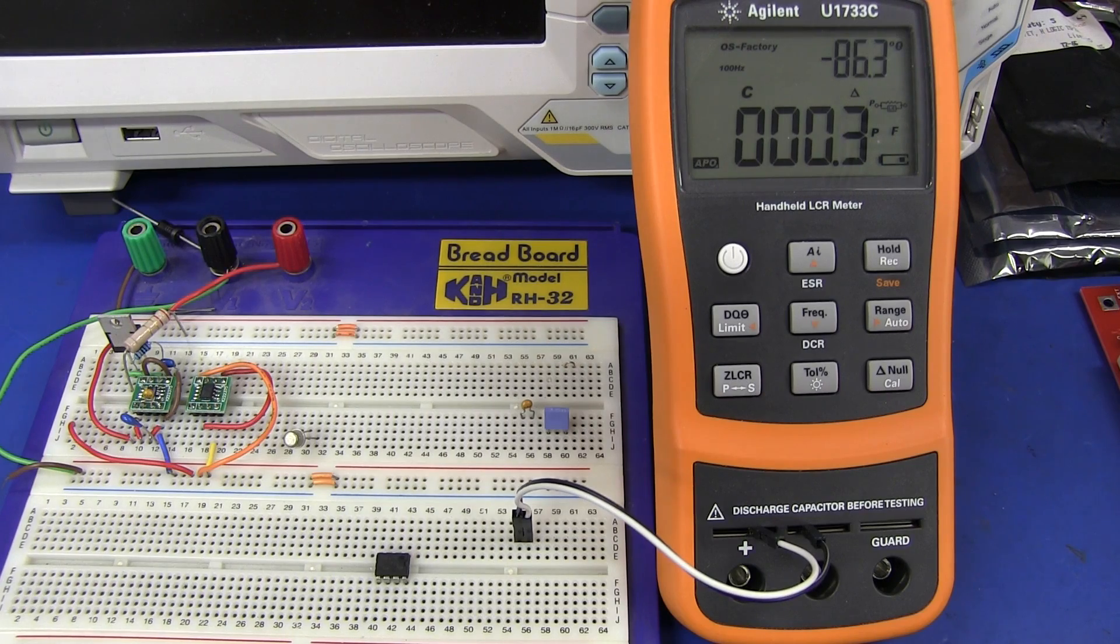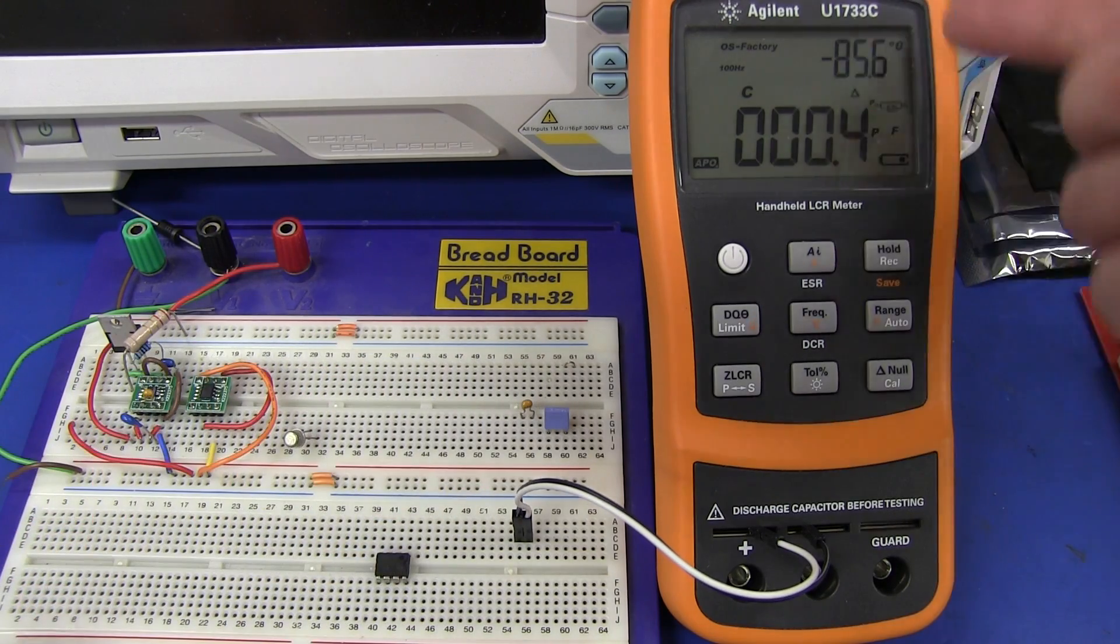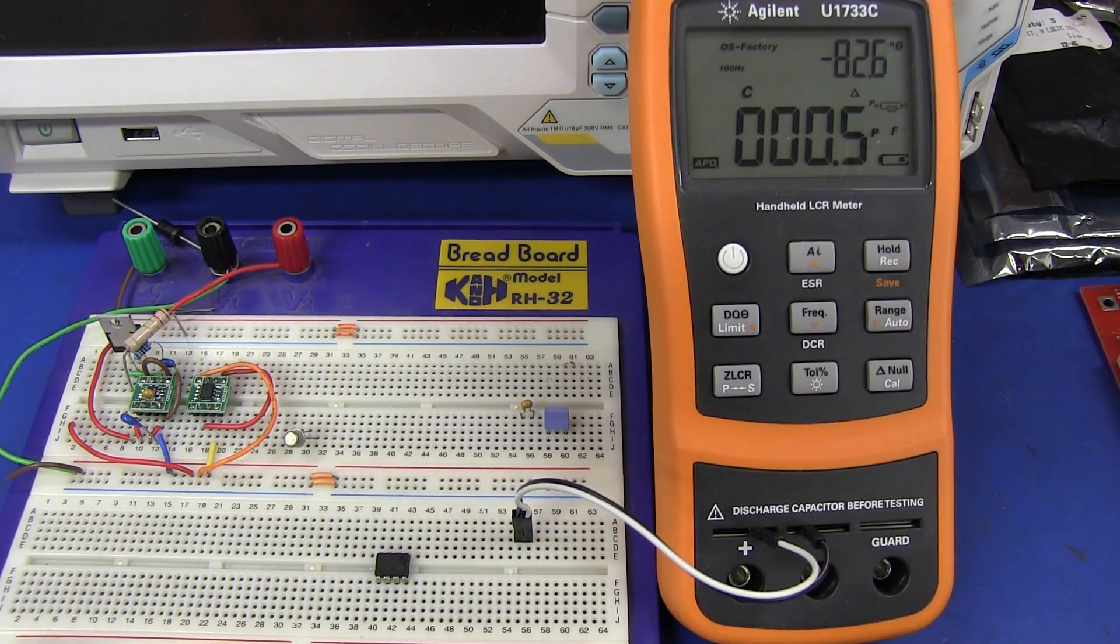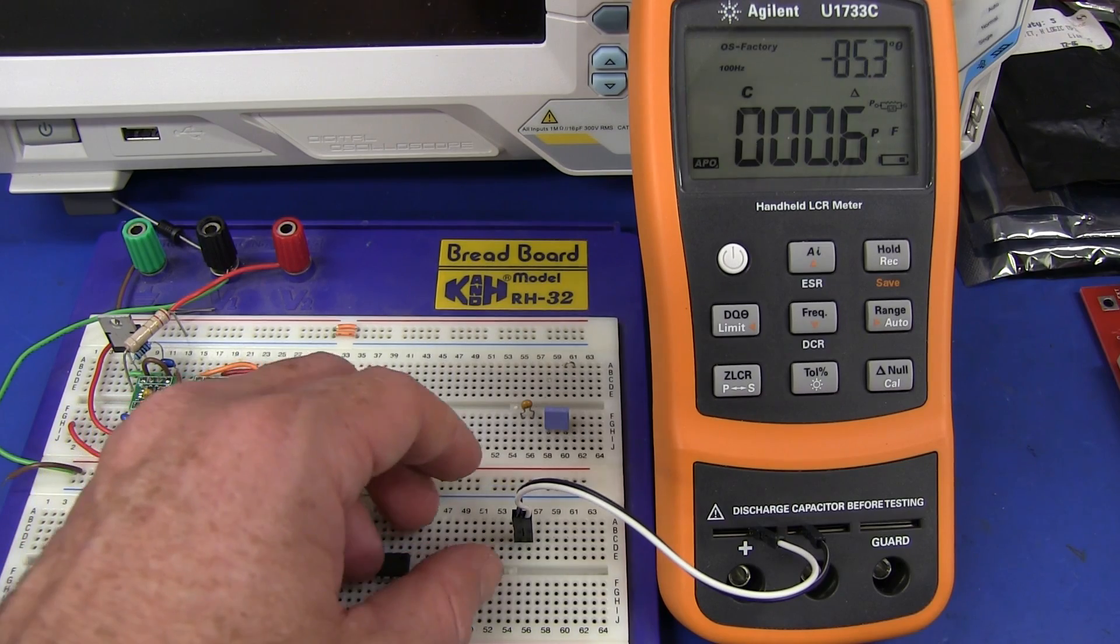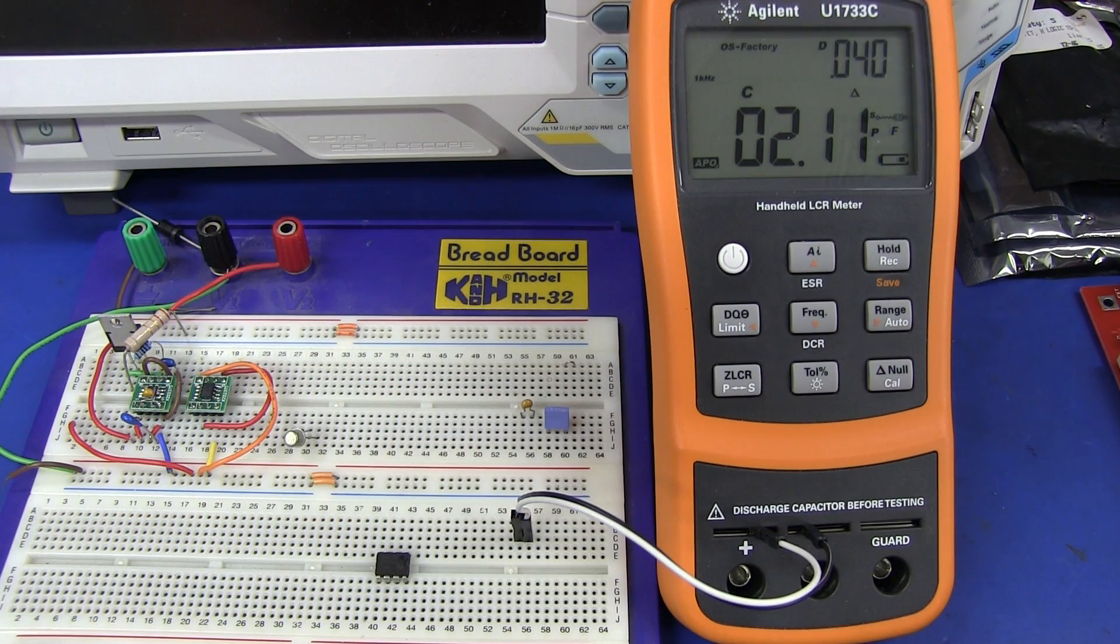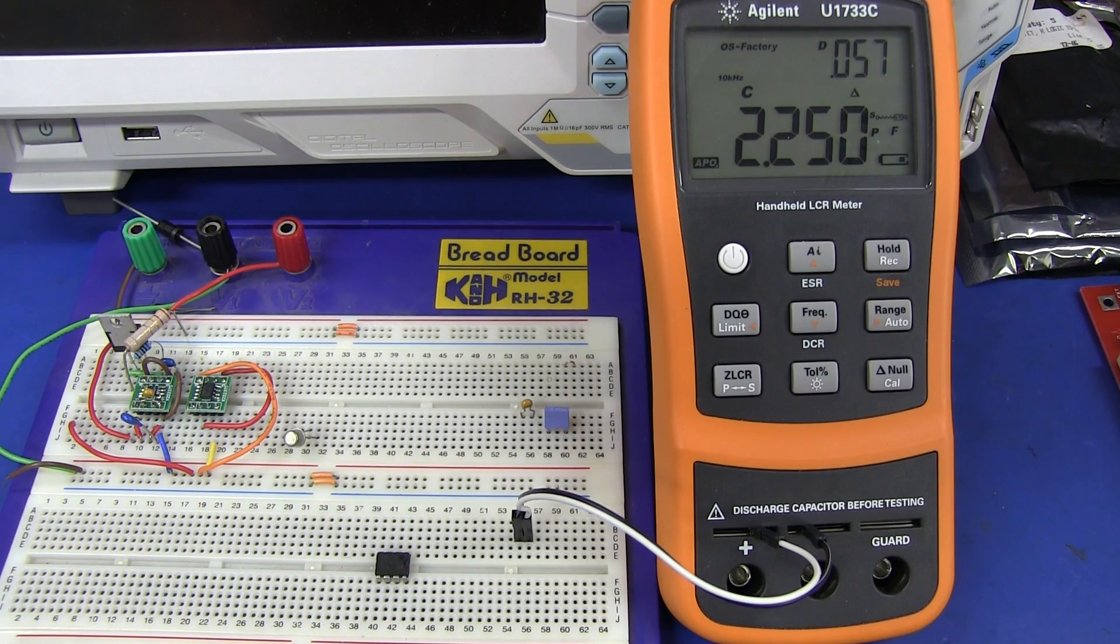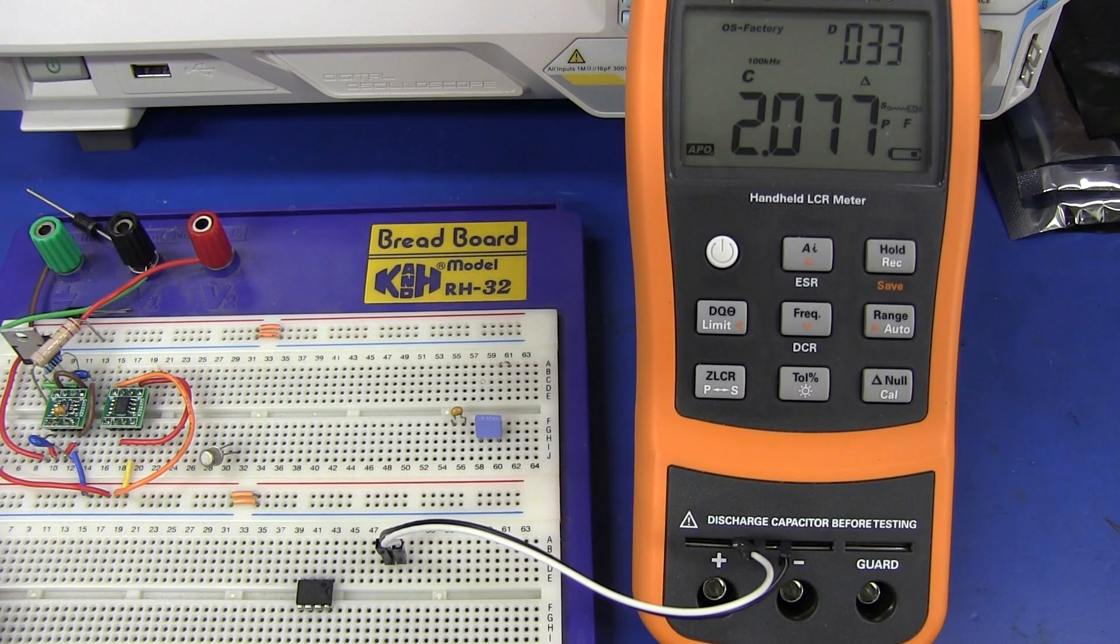And if you're curious to know the capacitance at different frequencies, well, at 100 hertz down here, half a puff. It's barely even measurable down in the noise. And at 1 kilohertz there, we're looking at just over 2 puff. And at 10 kilohertz, as you'd expect, it increases slightly again, 2.25. So there you go.